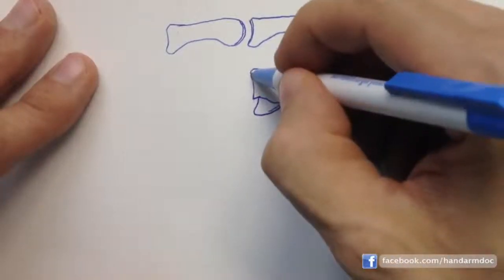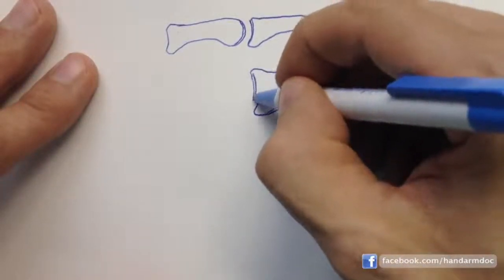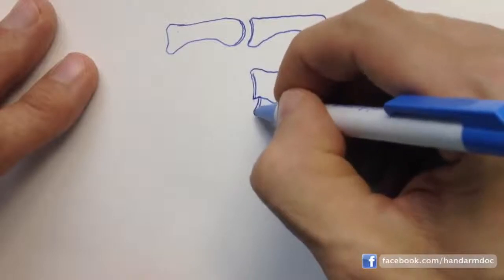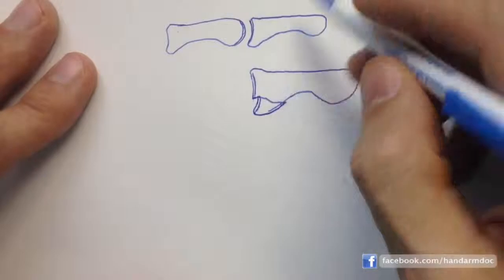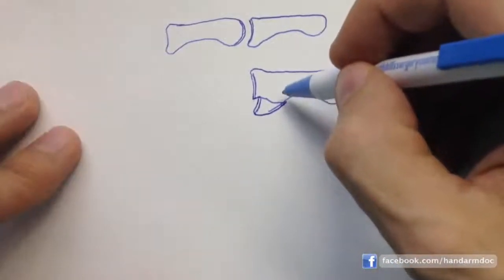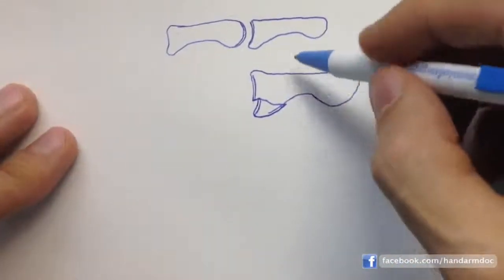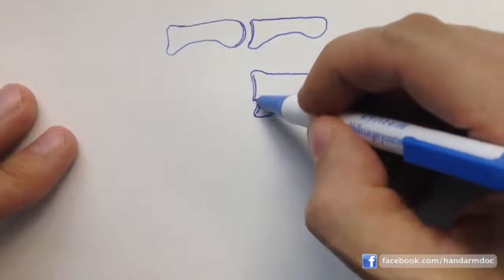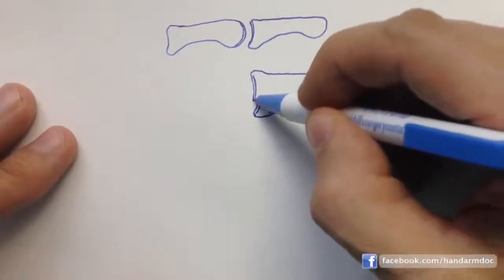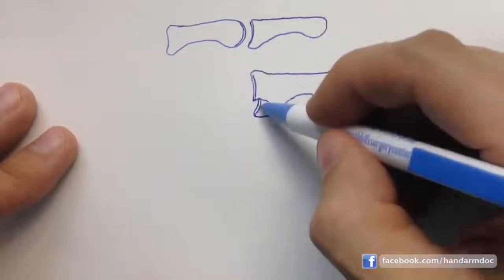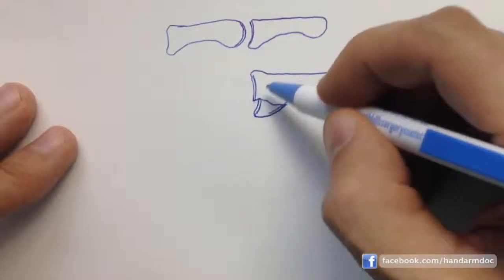What you have is a disruption of this smooth surface in the joint, and it could be outside of a joint as well, but this just illustrates it pretty well. So you have this little jagged edge here, and we call that a step-off, where there's literally a step, like you're gonna step up a staircase between this smooth surface and this smooth surface.